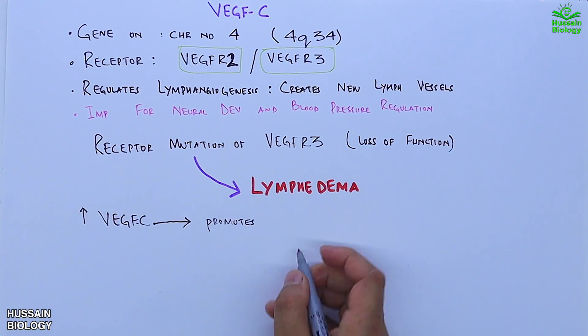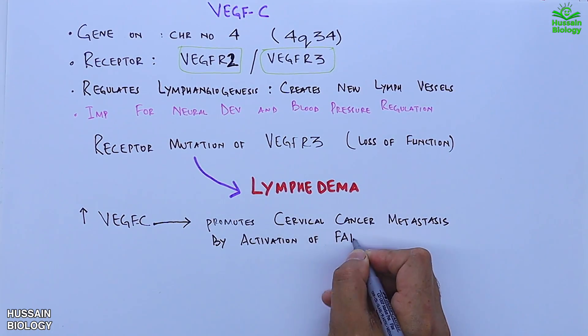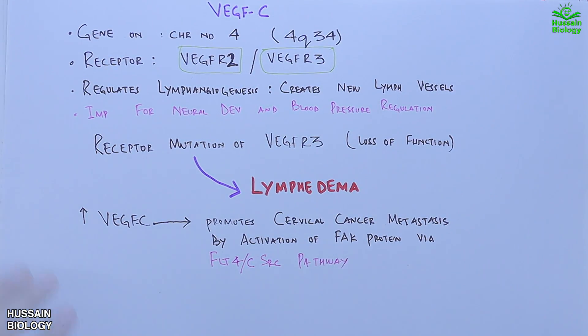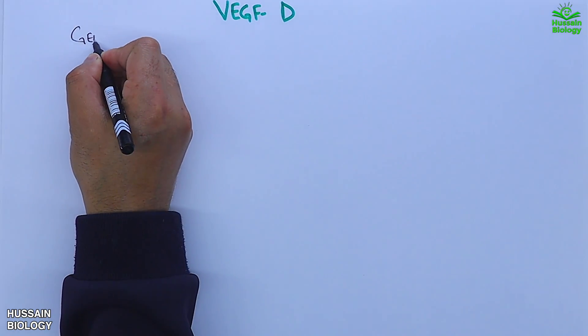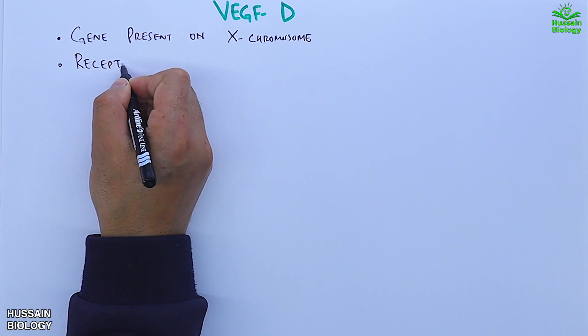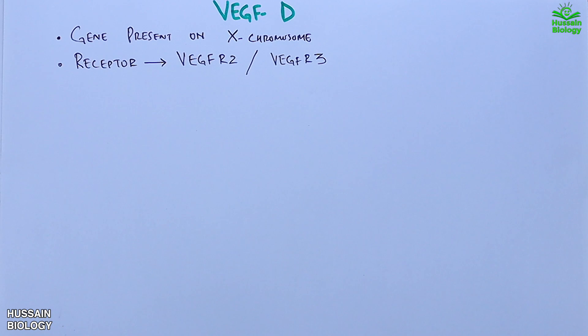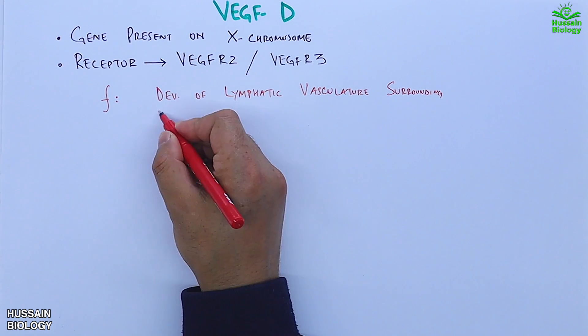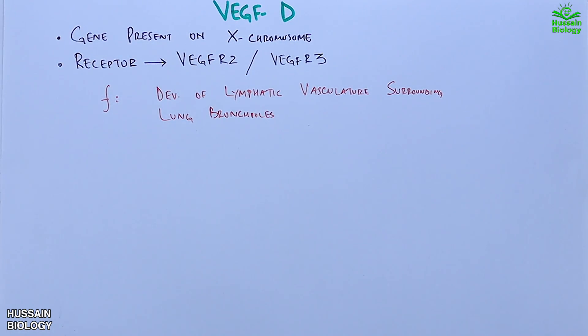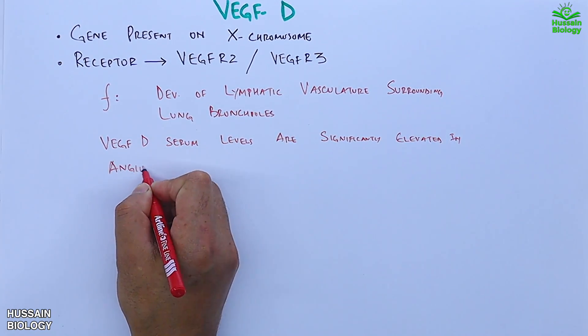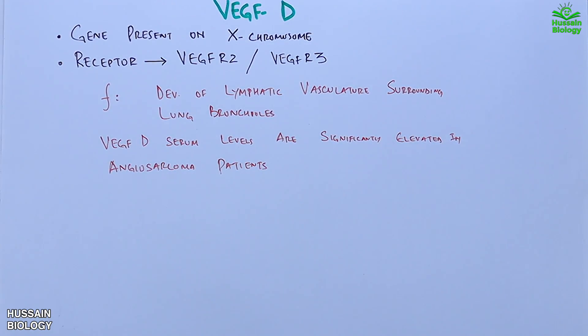VEGF-D's gene is present on X chromosome. The receptors for VEGF-D ligand are VEGFR2 and VEGFR3. Important functions of VEGF-D protein include development of lymphatic vasculature surrounding lung bronchioles. When we talk about diseases, VEGF-D serum levels are significantly elevated in angiosarcoma patients.